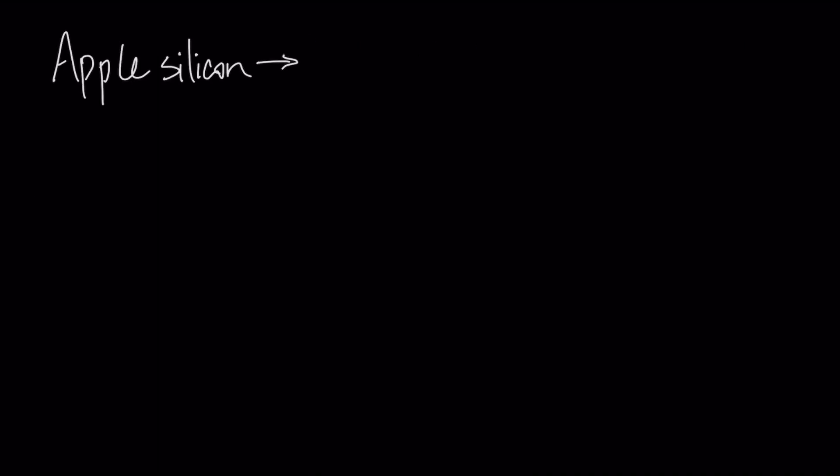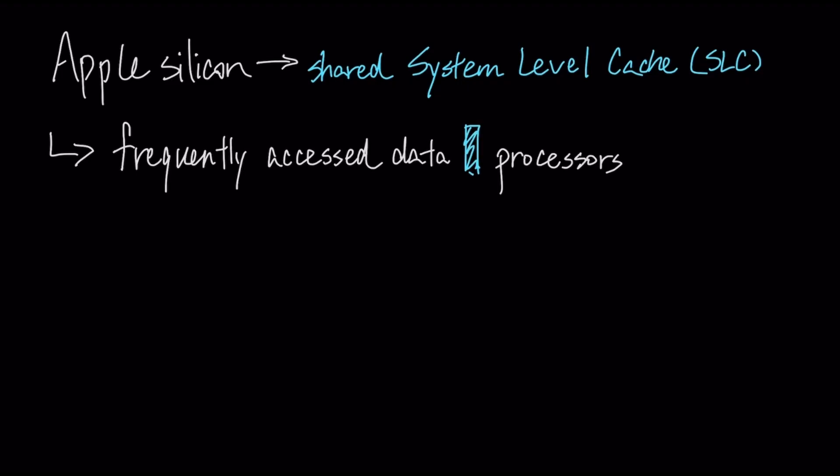To further mitigate latency, Apple Silicon uses a large shared system-level cache. This on-die cache keeps frequently accessed data close to all processors, avoiding power-intensive round-trips to the main DRAM.